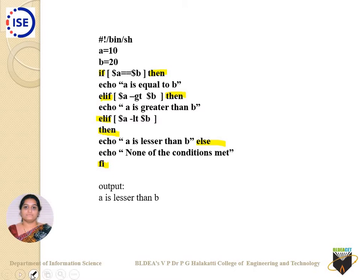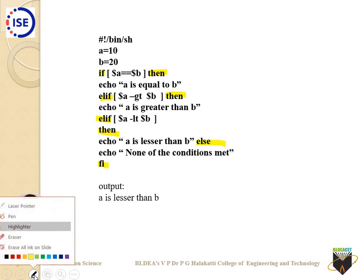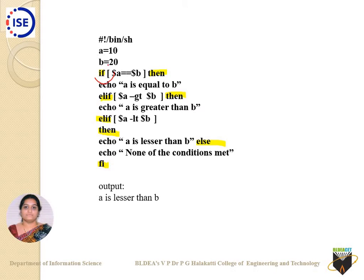Wherever if is present, there is always a corresponding then. If dollar A equals dollar B, then — the conditional statements run. Elif (E-L-I-F) is used the same way as else if in C. Elif dollar A hyphen GT dollar B, then echo 'A is greater than B'. Elif dollar A hyphen LT dollar B — that is less than — then echo 'A is lesser than B'. These -GT and -LT are keywords I will explain in more detail in the next slides.